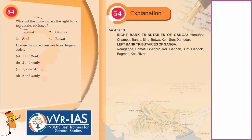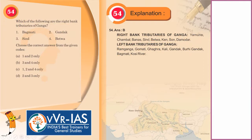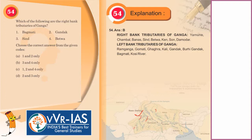The 54th question asks which of the following are right bank tributaries of the Ganga: Bagmati, Gandak, Sindh, and Betwa. Gandak is a left bank tributary. The right bank tributaries of Ganga are Yamuna, Chambal, Banas, Sindh, Betwa, Kain, Son, and Damodar. Left bank tributaries are Ram Ganga, Gomti, Ghaghra, Kali, Gandak, Bagmati, and Kosi river. A rough diagram shows the Ganga flowing with the right bank tributaries including Yamuna, Chambal, Sindh, Betwa, Kain, Son, and Rihand.